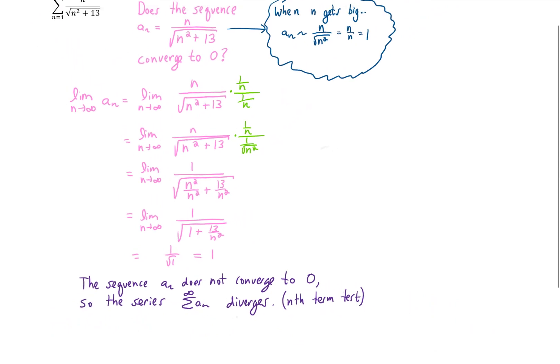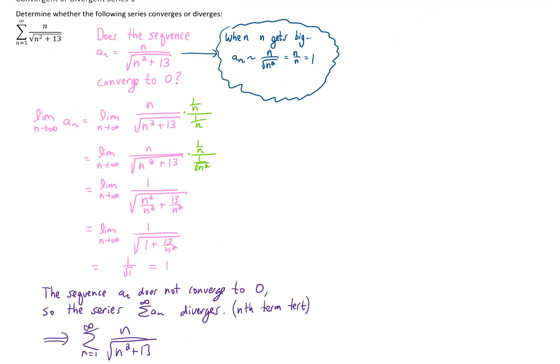So zooming out on this so that we can see the whole thing, we've determined that the given series diverges by the nth term test because the sequence inside of the series does not converge to zero.